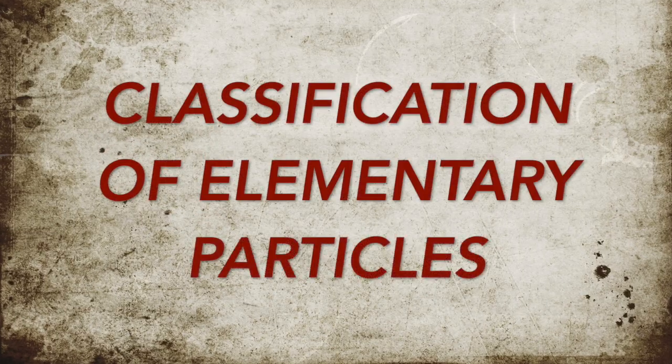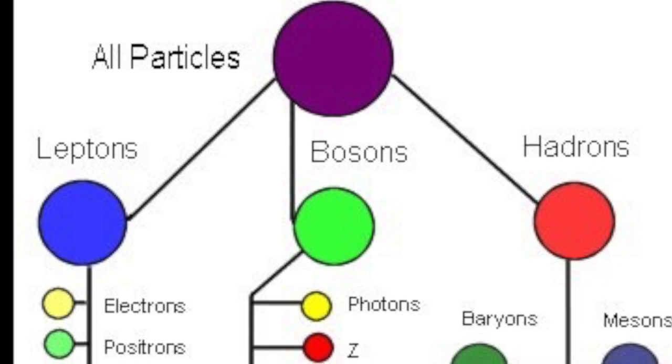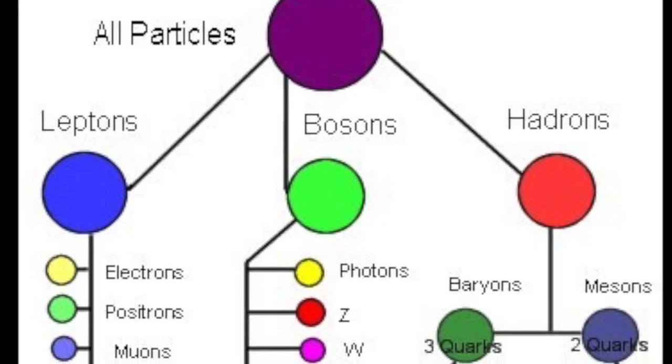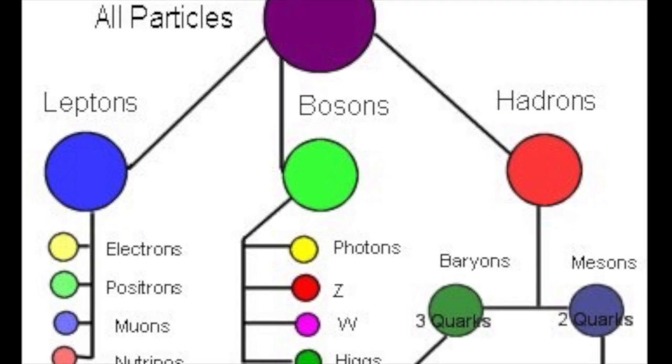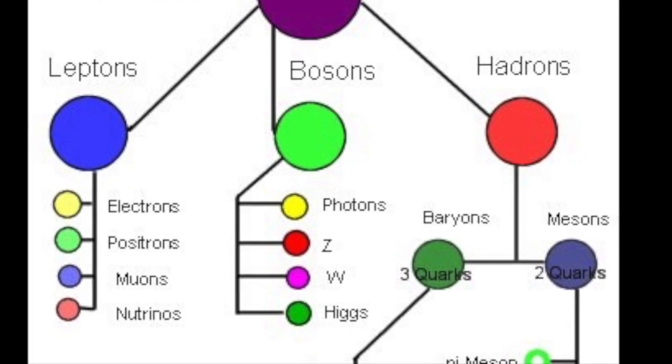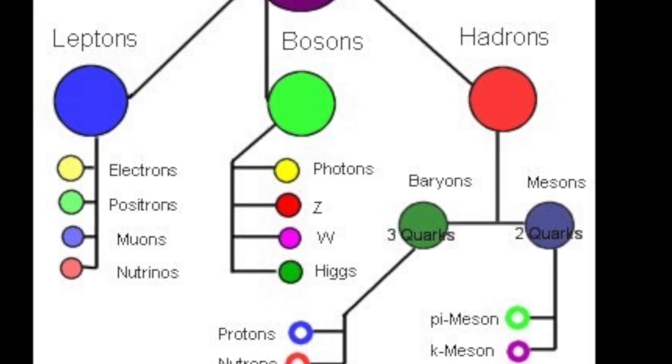It's time to classify elementary particles. Fundamental particles may be classified into groups in several ways. Here, all particles are mainly divided into three groups: leptons, bosons, and hadrons, on the basis of their interactions.